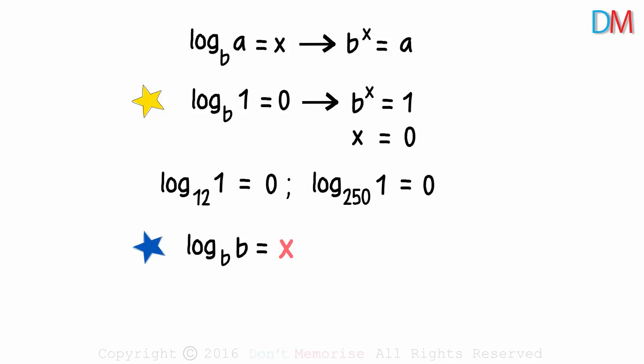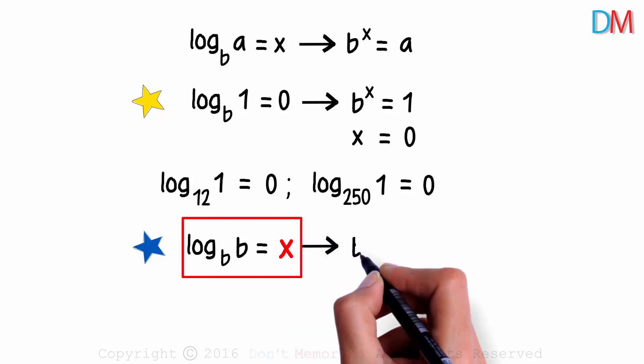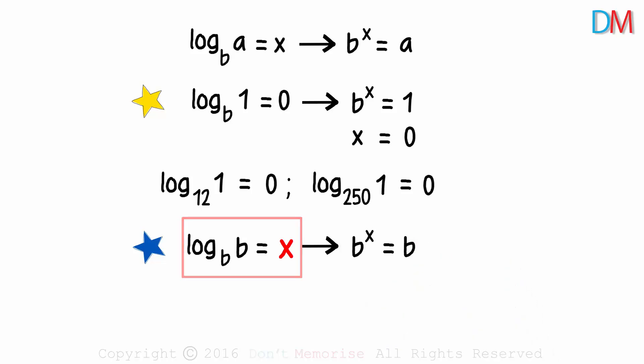Assume that it equals x. So in the exponential form, it can be written as b raised to x is equal to b. What will be the value of x here? Come on! It's easy! b to the power 1 will equal b. x will be equal to 1.